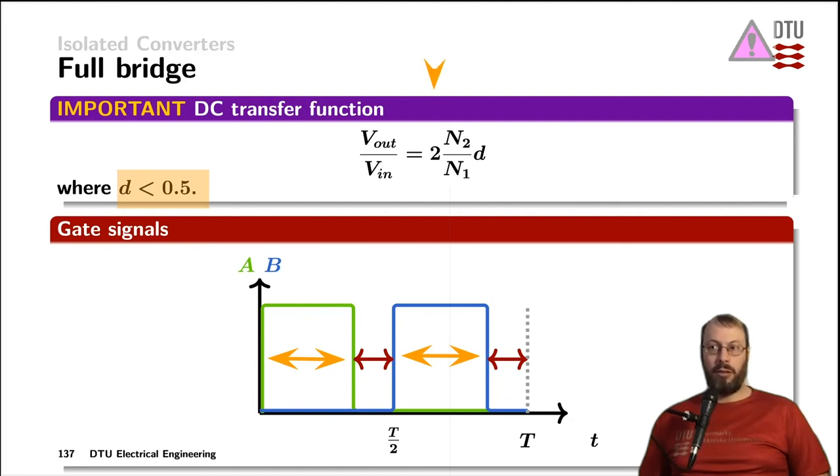Compared to the half-bridge converter, we end up with a factor of two here, and that is simply coming from the transfer ratio from Faraday's law over to the secondary side, where we're not converting just half of the input voltage, but this time we're transforming the full input voltage.